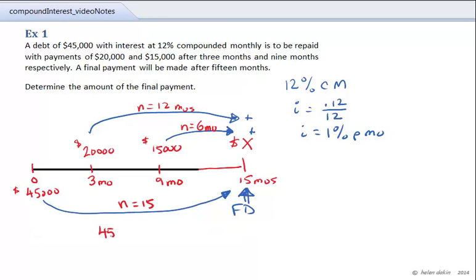We've got $45,000 inflated at 1 plus 1% per month for a total of 15 months. That debt is going to equal the sum of the three payments. And starting with the first payment, we've got $20,000 inflated at 1 plus 1% per month for 12 months plus the last payment of X dollars, which is on the same date as the focal date.